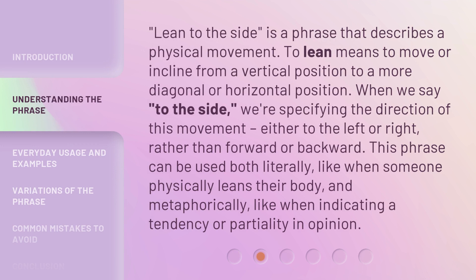'Lean to the Side' is a phrase that describes a physical movement. To lean means to move or incline from a vertical position to a more diagonal or horizontal position. When we say 'to the side,' we're specifying the direction of this movement, either to the left or right, rather than forward or backward. This phrase can be used both literally, like when someone physically leans their body, and metaphorically, like when indicating a tendency or partiality in opinion.